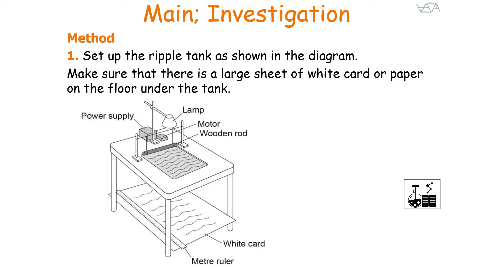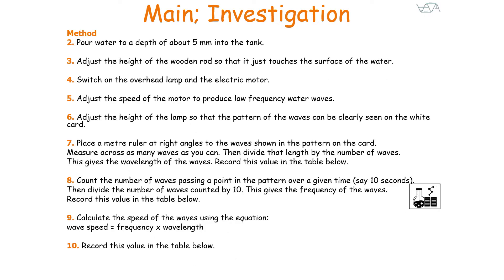Set up the ripple tank as shown in the diagram and make sure there is a large sheet of white card or paper under the tank. Pour water to a depth of 5mm into the tank, adjust the height of the wooden rod so it just touches the surface of the water, switch on the overhead lamp and the electrical motor, then adjust the speed of the motor to produce a low frequency water wave. Adjust the height of the lamp so that the wave patterns can be clearly seen on the white card underneath.